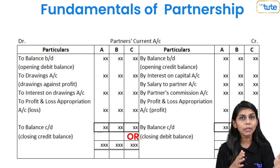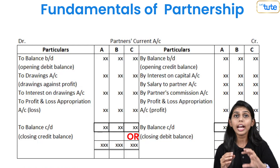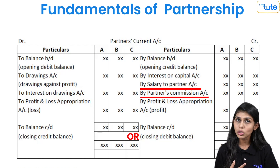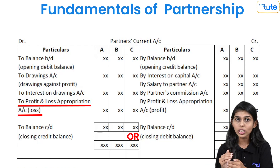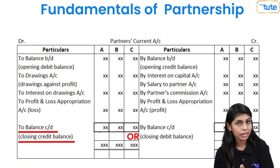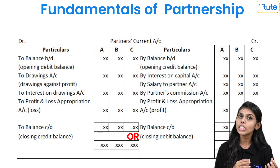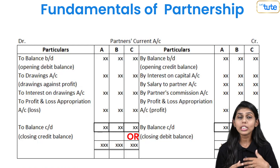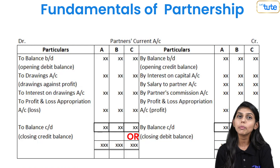We can prepare a columnar partner's capital or current account for presentation purposes, but separate accounts are maintained for each partner. In the current account: opening debit or credit balance is brought forward; interest on capital, salary, or commission to partner and share of profit are credited; drawings, interest on drawings, and share of losses are debited; and finally there is a closing balance — either credit (if credit side is higher) or debit (if debit side is higher). A debit balance can occur if there are losses or if a partner has made excess drawings.